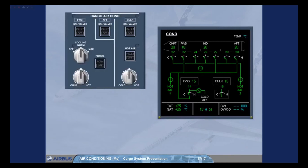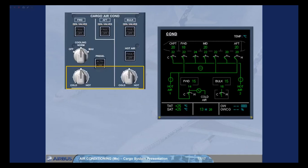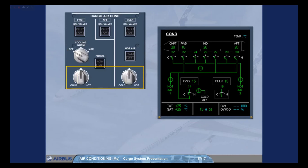For normal operation of the cargo conditioning system, the only pilot inputs required are: to check that all pushbutton switches have no white light on, to set the required temperatures, and if installed, to set the cooling selector to OFF unless livestock, food, or plants are carried. Note: the mid position of the temperature selectors corresponds to approximately 15 degrees Celsius, the cold position to 5 degrees Celsius, and the hot position to 25 degrees Celsius.